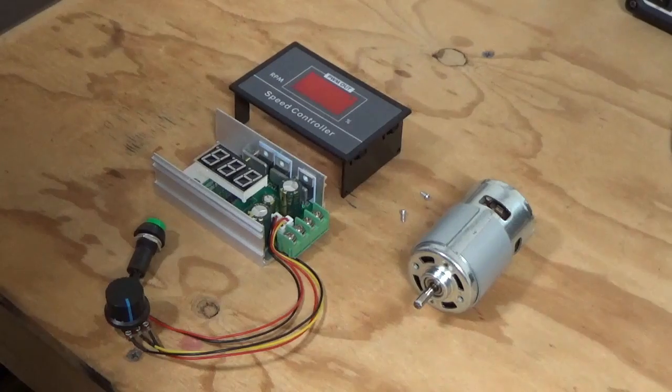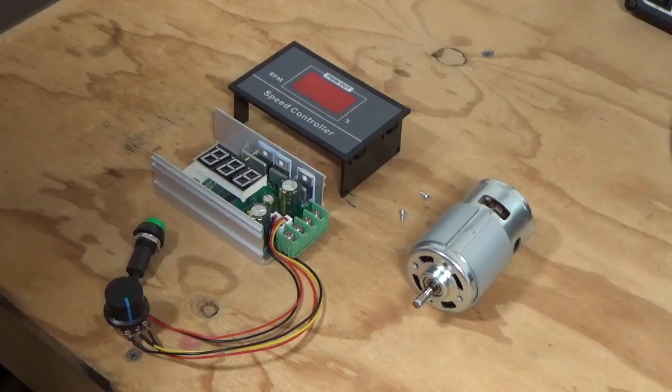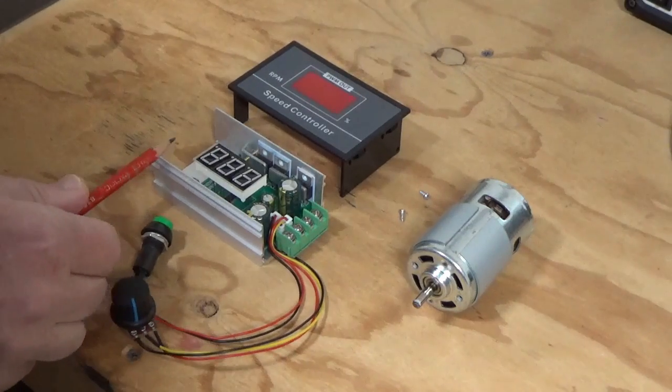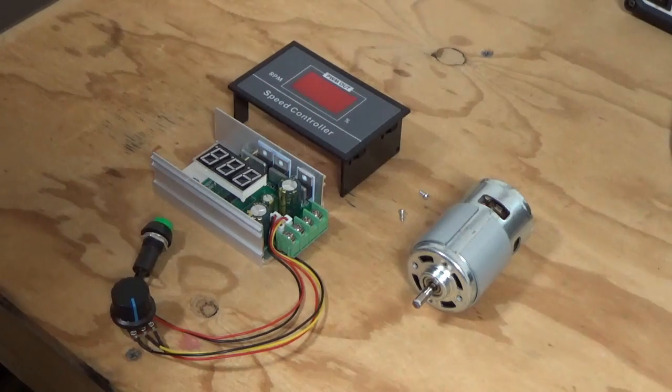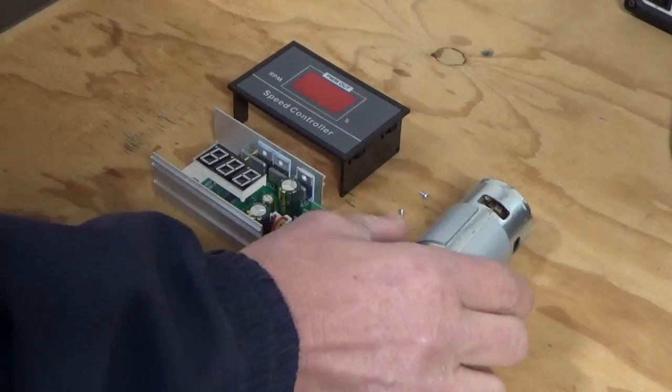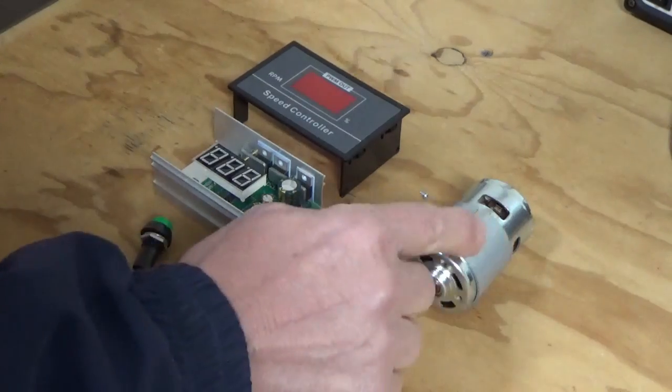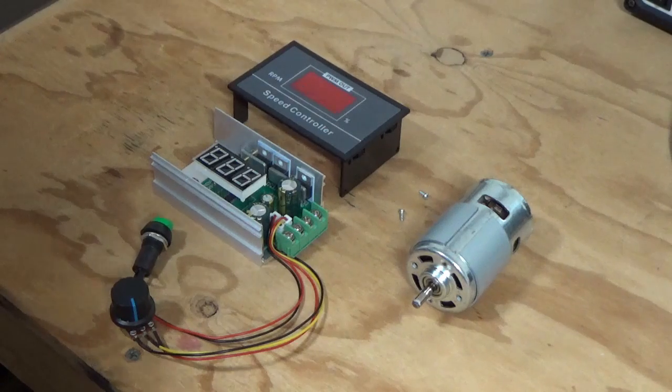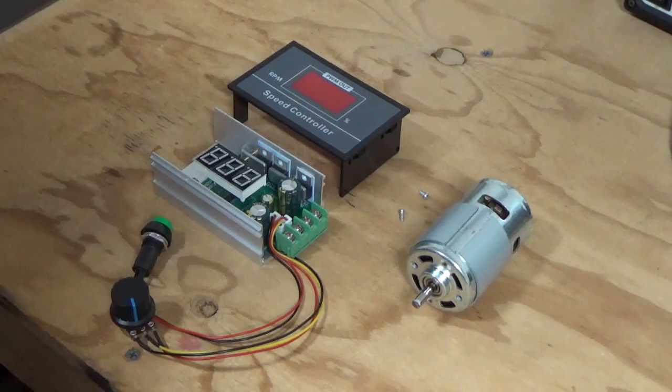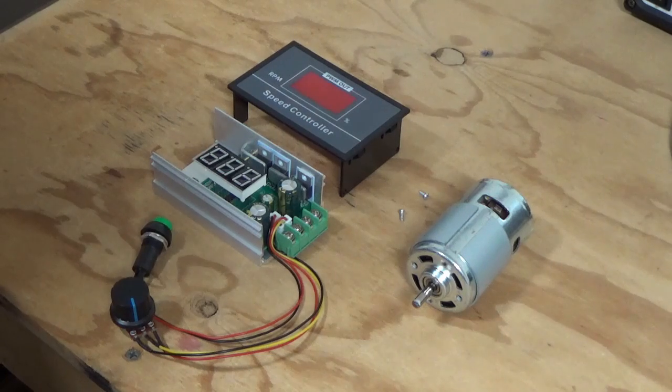So what we have here is a DC motor speed controller. This particular one is the first one that we purchased and worked perfectly well. We've got these speed controllers to control these DC motors. What we did after that is order another three for some projects that we were looking at doing, and we ran into problems with those three.